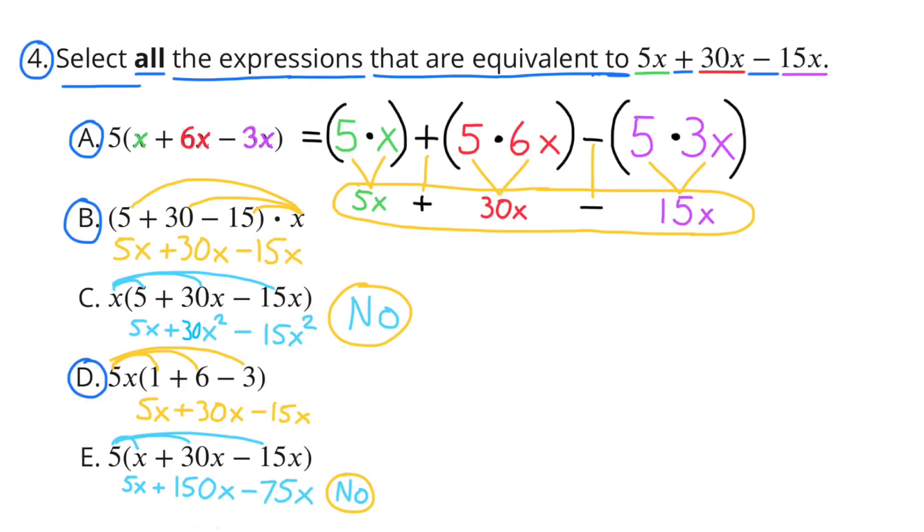Number 4. Select all the expressions that are equivalent to 5x plus 30x minus 15x. Part A. 5 times X plus 6x minus 3x. That's equivalent to 5 times X, or 5x, plus 5 times 6x, or 30x, minus 5 times 3x, which is 15x. So, yes, that expression is equivalent. Part B. 5 plus 30 minus 15 times X. That's equivalent to 5x plus 30x minus 15x. Yes, that expression is also equivalent.